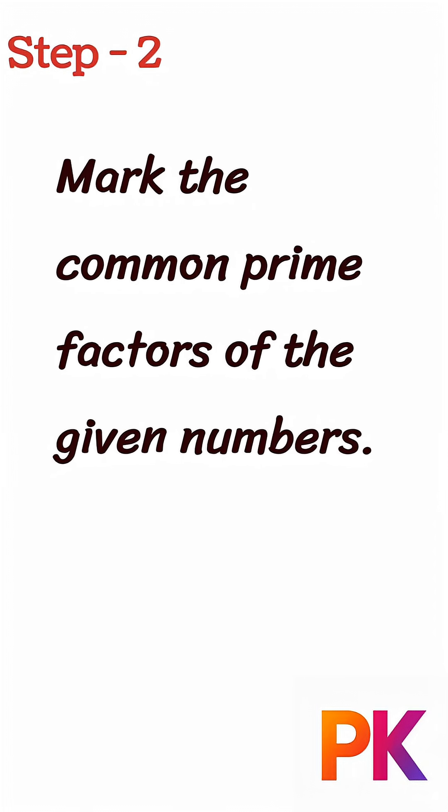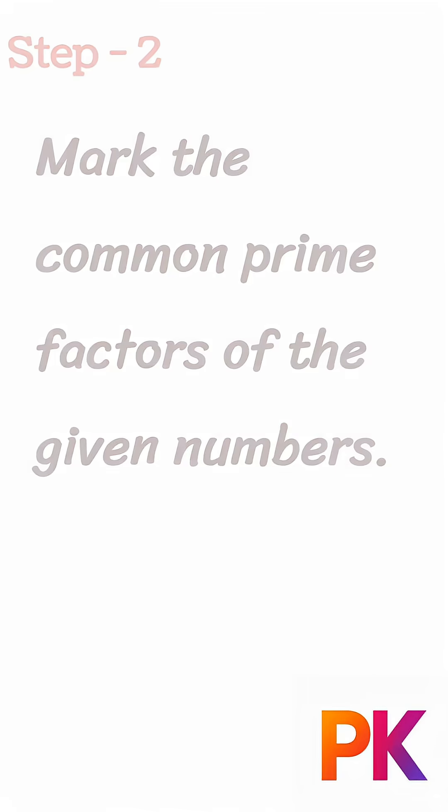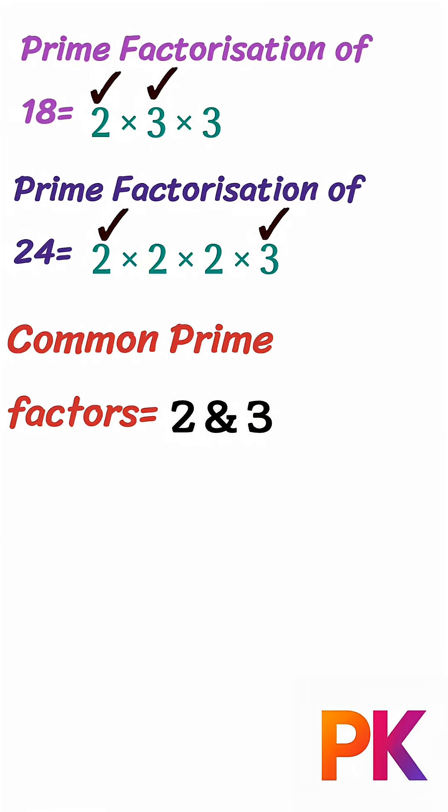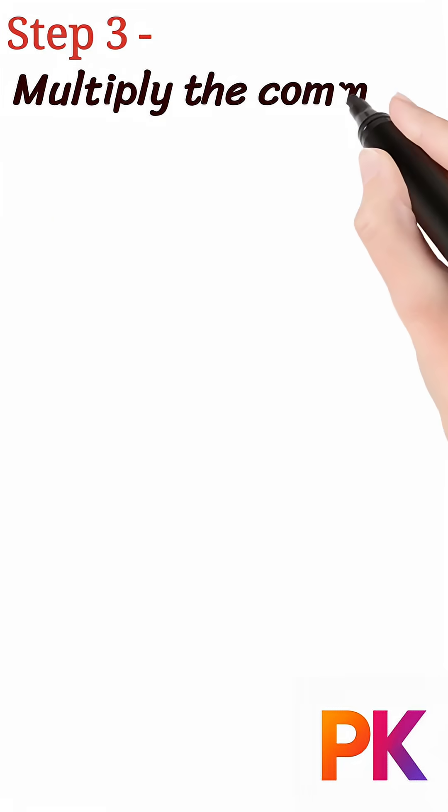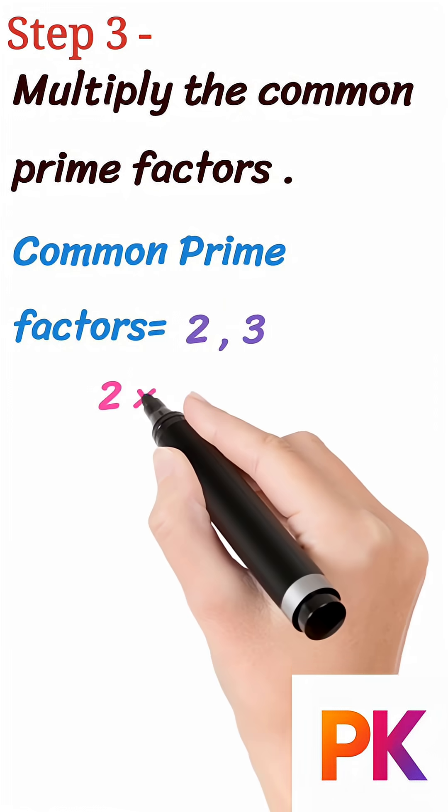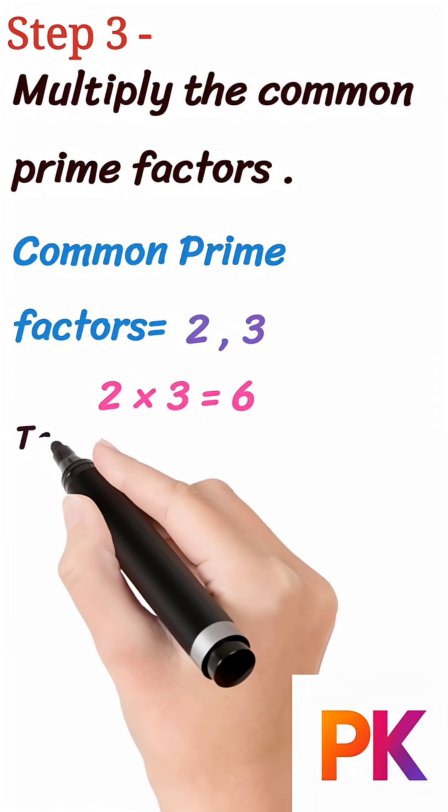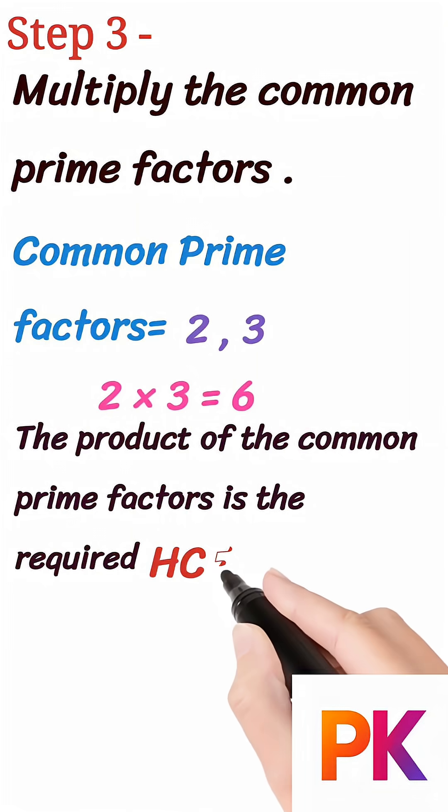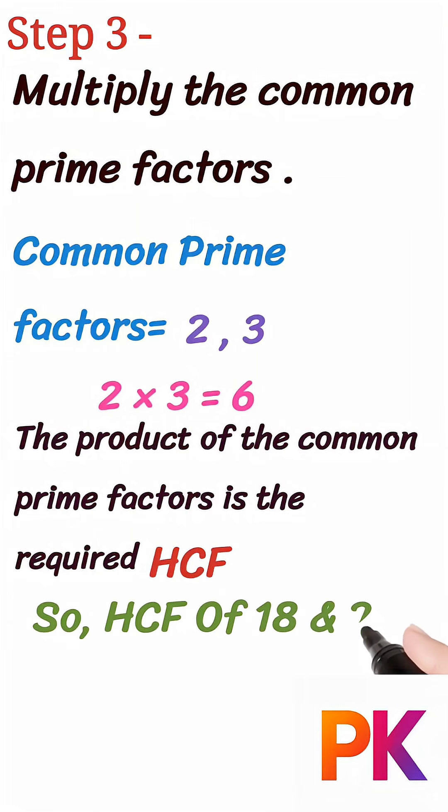Mark the common prime factors. We have 1, 2 and 1, 3 in common. Multiply the common prime factors. 2 into 3 is equal to 6. The product of common prime factors is the HCF. So, the HCF of 18 and 24 is 6.